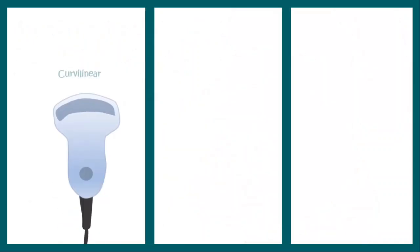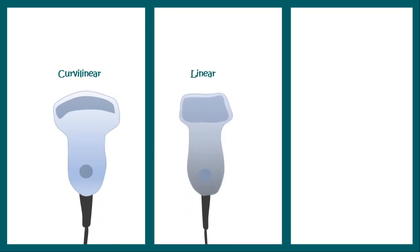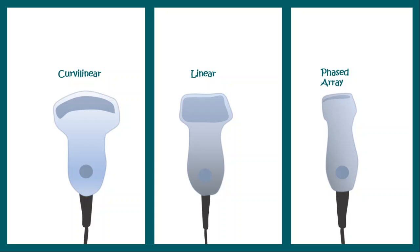There are different sorts of probes used in USG, such as the curvilinear probe, linear probe, or phased array probe. Different probes have different applications.